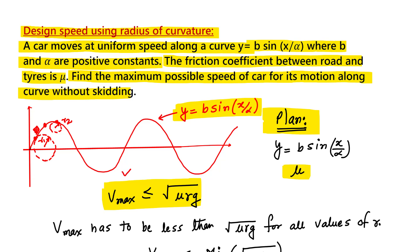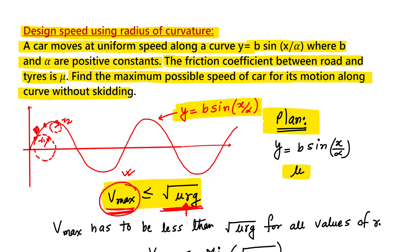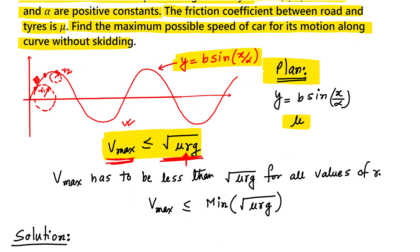So how can we find the maximum velocity? V_max has to be less than √(μRg). Now since R is varying, V_max has to be less than the minimum of this value. We can write that V_max has to be less than √(μRg) for all values of R, which means V_max has to be less than the minimum of √(μRg). Using this concept, let us solve this problem.